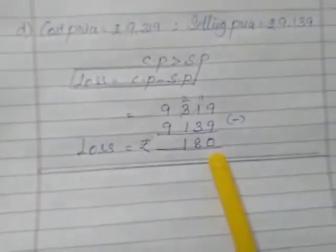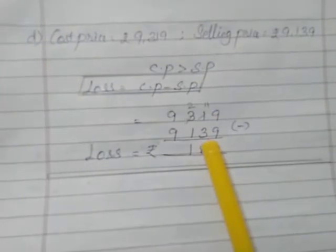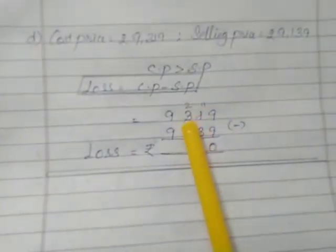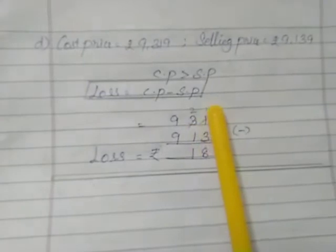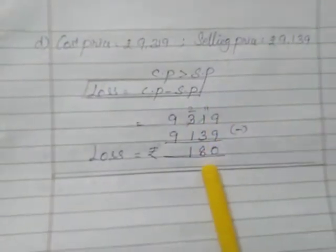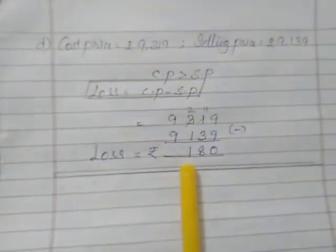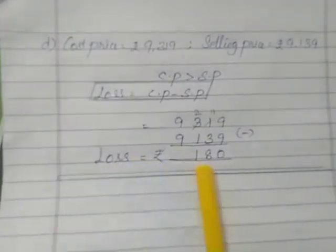9 minus 9, 0. 1 minus 3, we can't subtract, so we can borrow from the number before. The 3 converts to 2. The 1 converts to 11. 11 minus 3, that is 8. 2 minus 1, that is 1. Loss amount is 180.